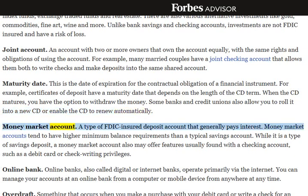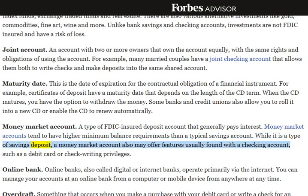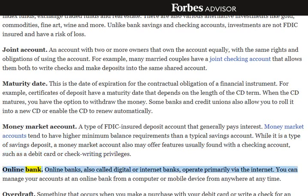Money Market Account: A type of FDIC-insured deposit account that generally pays interest. Money Market Accounts tend to have higher minimum balance requirements than a typical savings account. While it is a type of savings deposit, a Money Market Account may also offer features usually found with a checking account, such as a debit card or check-writing privileges. Online Bank: Online banks, also called digital or internet banks, operate primarily via the internet. You can manage your accounts at an online bank from a computer or mobile device from anywhere at any time.